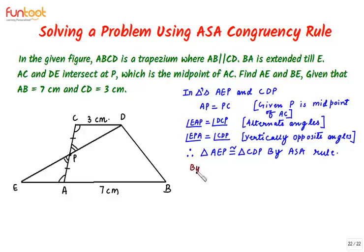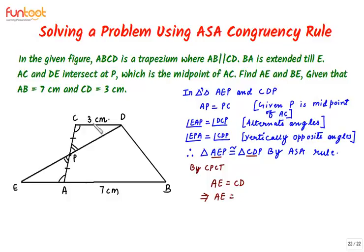By CPCT, AE is equal to CD. Since CD is given to be 3 centimeters, AE is also equal to 3 centimeters. So the value of AE has been found.